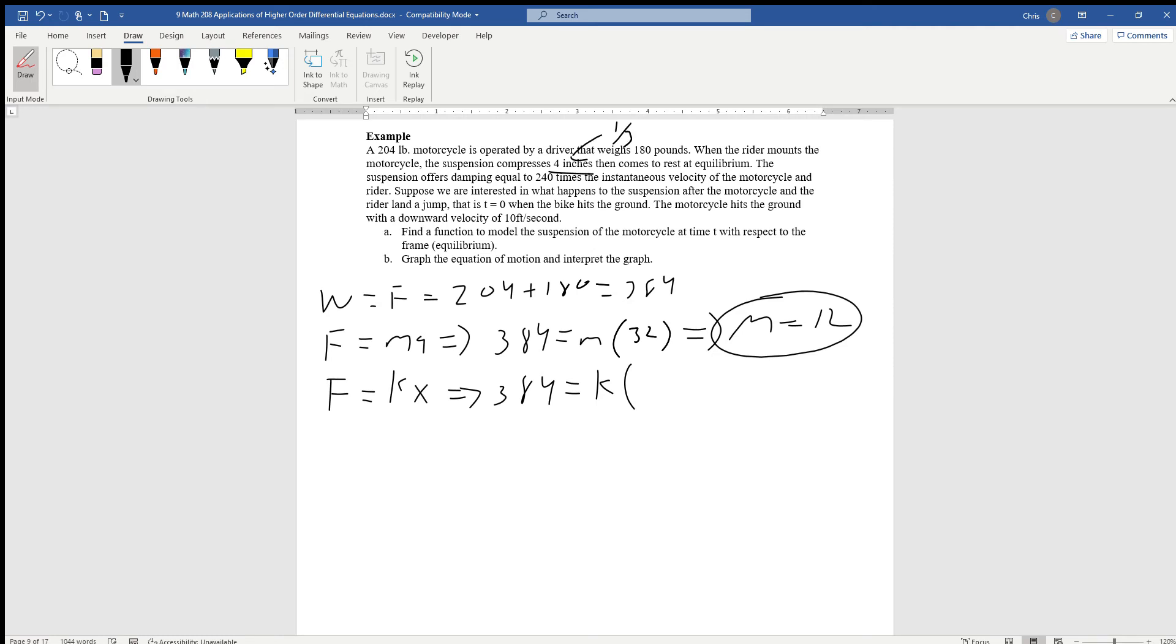Now 4 inches is really a third of a foot. So we multiply by a third, and we multiply both sides by 3. That gives me 1152 for k.